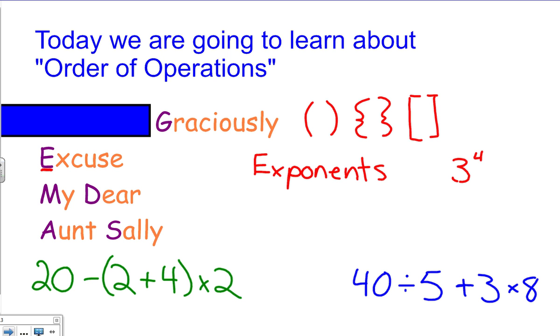All right, the next thing we look at, we have My Dear. We're looking for multiplication and division from left to right. Multiplication and division—it can be either or whenever you're doing this, but it should be done from left to right. These are written in the same step because we do them in the same step. And finally, we have Aunt Sally, so Graciously Excuse My Dear Aunt Sally, and that stands for addition and subtraction. This is the last step you should do when solving a problem: addition and or subtraction from left to right.